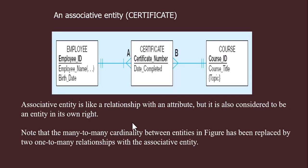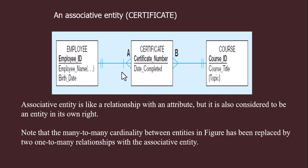This is an example of an associative entity associated between employee and course. Both relationship cardinalities are many, with the possibility of optional or one, but the relationship constraint should be many. This certificate is the associative entity between employee and course — one employee can be issued many certificates, or at least one certificate must be issued to the employee. For a particular course many certificates can be issued, or there can be the possibility that no certificate is issued at all.